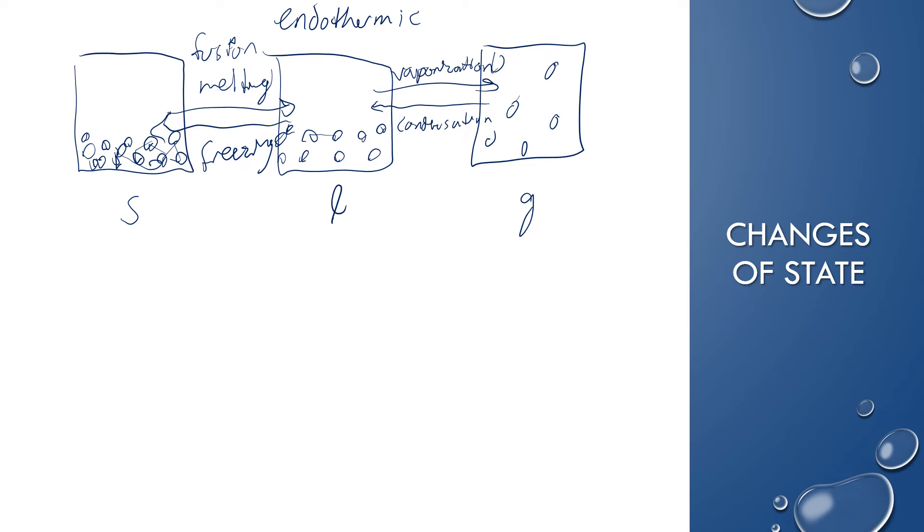The reverse direction, so the ones I wrote on the bottom, freezing and condensation, those are exothermic. Exit. So, in order for you to go from a gas to a liquid, that gas has to lose some of its heat energy. So, it loses some energy, so it slows down to become a liquid. Liquid then can slow down and become a solid by losing more energy and freezing. So, make sure that you kind of understand endo versus exothermic in terms of changes of state.